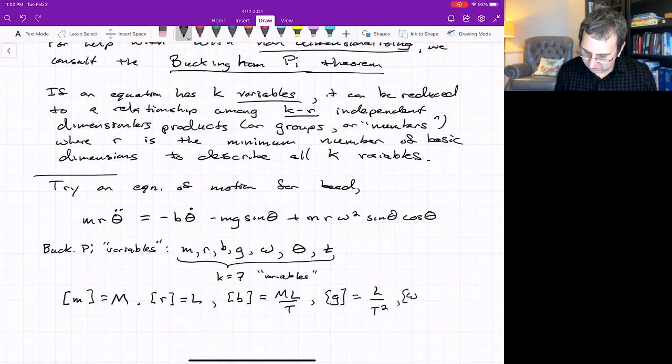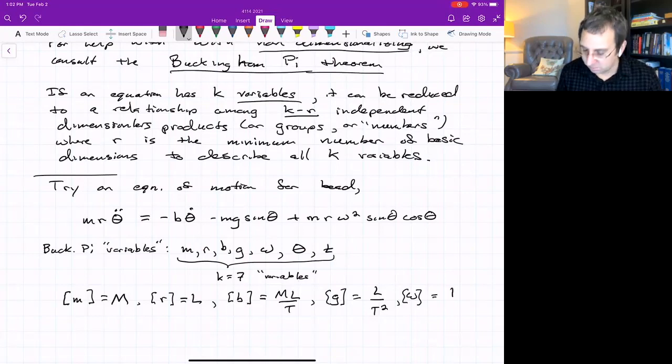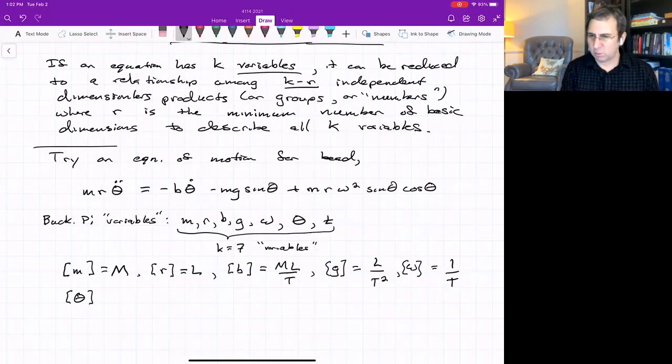Dimensions of gravitational acceleration has dimensions of acceleration. So it's length over time squared. Dimensions of the angular velocity. Angular velocity is technically the number of radians, which is dimensionless, divided by time. So it's rotation rate, radians per time. Since radians are dimensionless, it's one over time T.